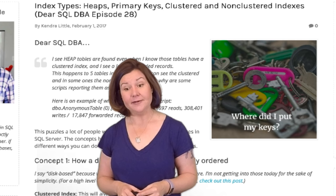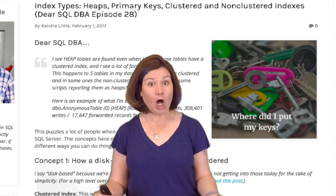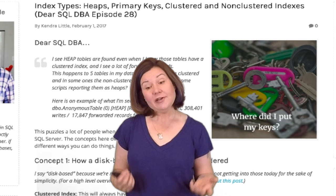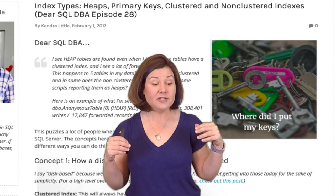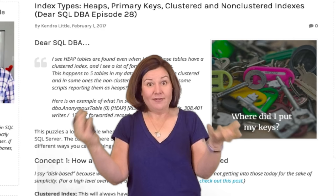When you create a clustered column store index, you're telling SQL Server to store every column in the table in that columnar format, which is really great for scanning the whole column and doing aggregations. When you create a column store index, you don't pick keys because you're saying you want the whole table — every column — stored in this columnar format. There's no magical lookup based on some columns because we're not row-based anymore; we're column-based.